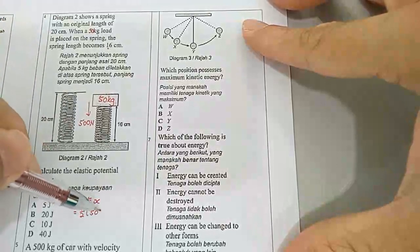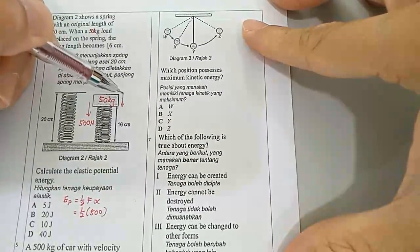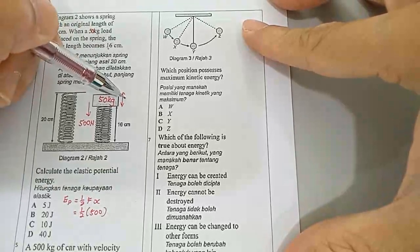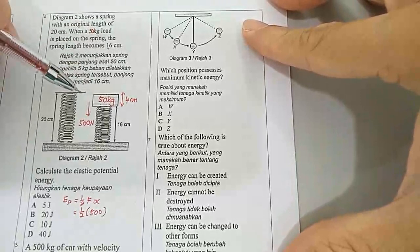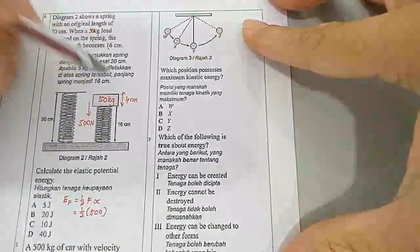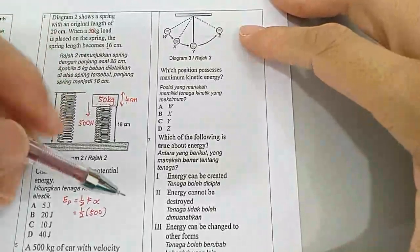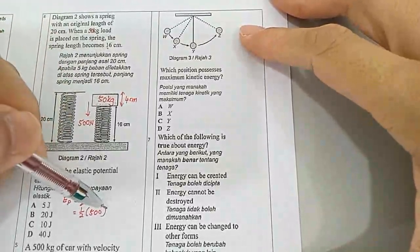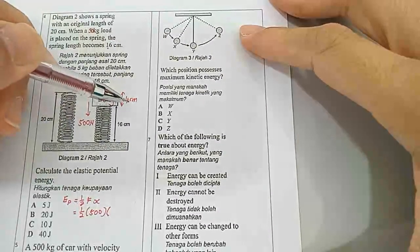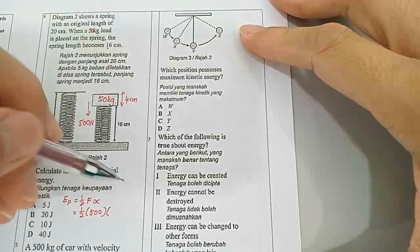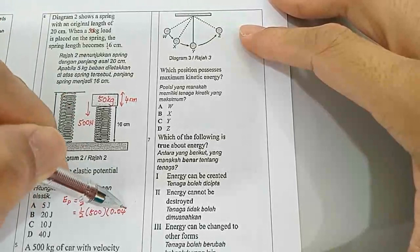So put in 500 for the force, and then the extension or in this case the compression is 4 centimeters. From 20 centimeters change to 16 centimeters, so it compressed 4 centimeters. When you want to put in here, you must change the centimeter into meter. So 4 centimeters is equal to 0.04 meters.